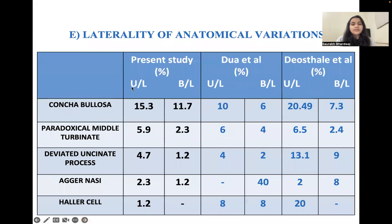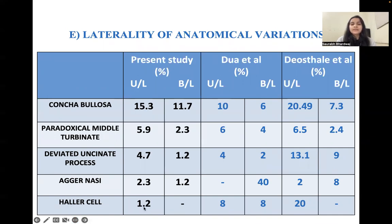In our study, concha bullosa was present unilaterally in 15.3% of patients. Paradoxical turbinate was present in 5.9%, and deviated uncinate process in 4.7%. Agger nasi cells were seen unilaterally in 2.3% and Haller cells unilaterally in 1.2% of patients. Concha bullosa was seen bilaterally in 11.7%, paradoxical middle turbinate bilaterally in 2.3%, deviated uncinate process bilaterally in 1.2%, and agger nasi bilaterally in 1.2% of patients.